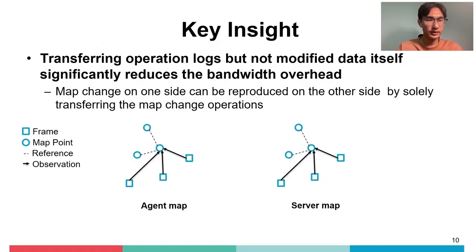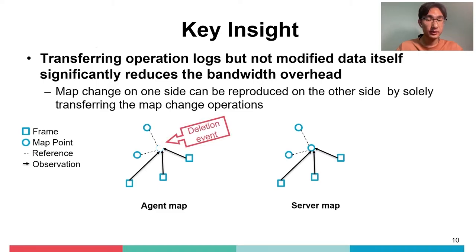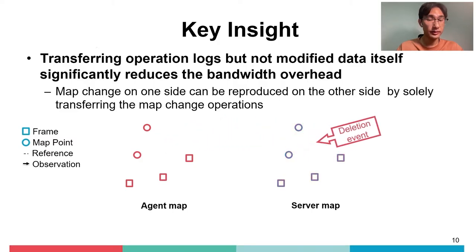So, how does SwarmMap scale up collaborative SLAM? We find that map changes on one side can be reproduced on the other side by solely transferring the map change operations. When a deletion event occurs on the agent map, the map point is deleted and its relevant frames and map points are also modified. We transfer the event to the server and replay it on the corresponding map point, so the same modification is reproduced on the relevant map elements. Thus, the server map and the agent map are synchronized, enabling lightweight map synchronization by avoiding transferring massive data itself, significantly reducing bandwidth overhead.